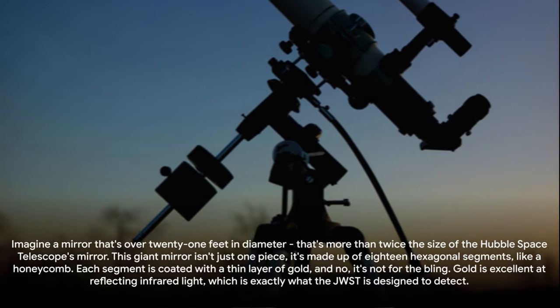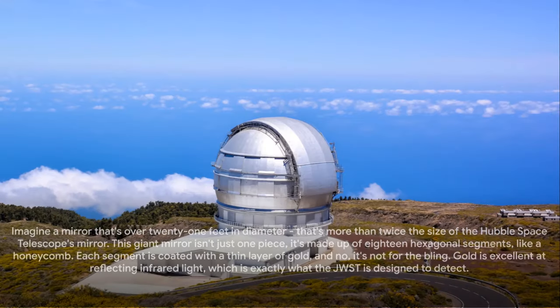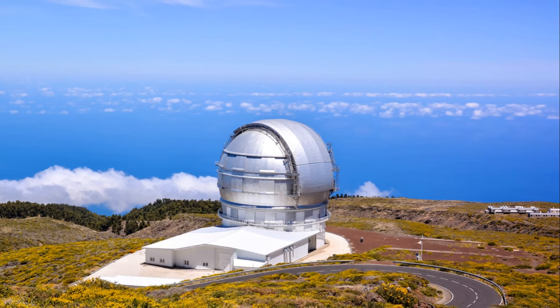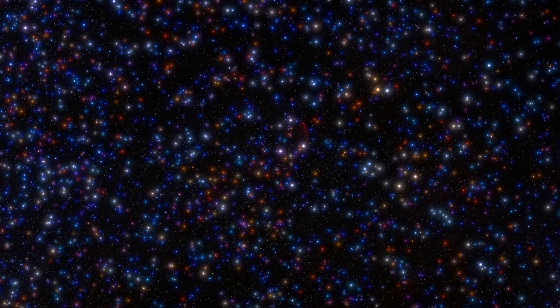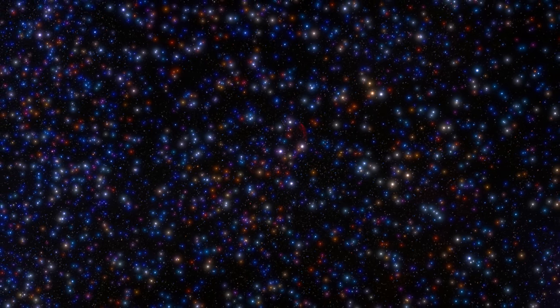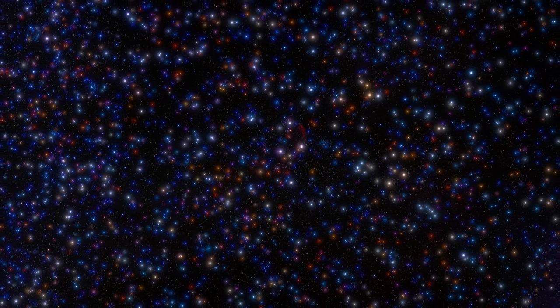Infrared light is essentially heat radiation. It's emitted by stars and galaxies, but it's also given off by the sun. That's where the sunshield comes in. This isn't your everyday parasol. The sunshield of the JWST is a technological marvel in its own right.